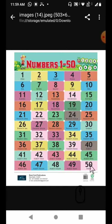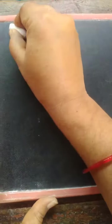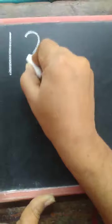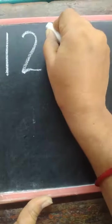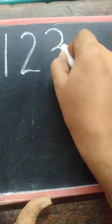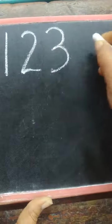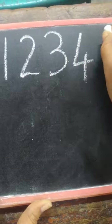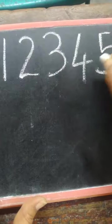Is it clear, children? Shall we write the numbers from 1 to 20? 1, 2, 3, 4, 5.